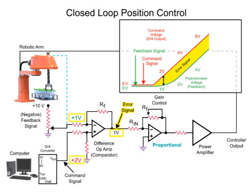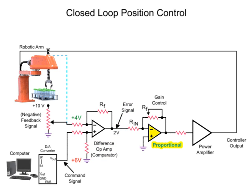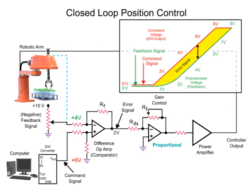In this system, there is not an immediate response by the robotic arm to the command signal. The delay of the arm and feedback signal creates a positive error signal voltage at the output of the difference op-amp. The error signal is inverted by the proportional difference op-amp to a negative voltage, then amplified by the power amp and inverted to a positive voltage applied to the motor of the robotic arm. The robotic arm moves to the desired position until the error signal at the difference op-amp is zero. When the arm reaches the desired position, the difference op-amp voltage is reduced to zero and the feedback voltage from the potentiometer equals the command voltage of the computer.